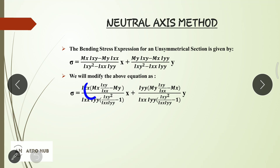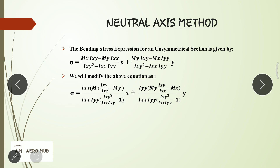For the unsymmetrical section, I am using the same equation. I am taking IXX out from the numerator and IXX·IYY out from the denominator. Similarly, in the second part, I am taking IYY out from the numerator and IXX·IYY from the denominator. We can then cancel IXX·IXX in the first part and IYY·IYY in the second part.